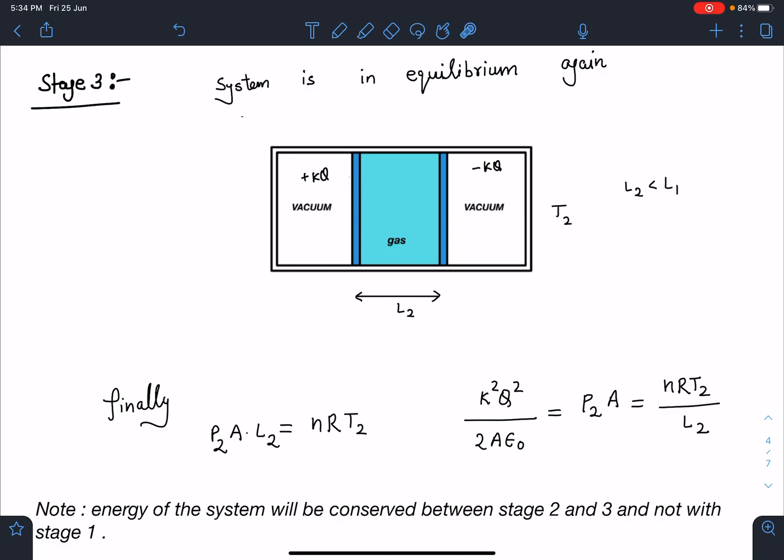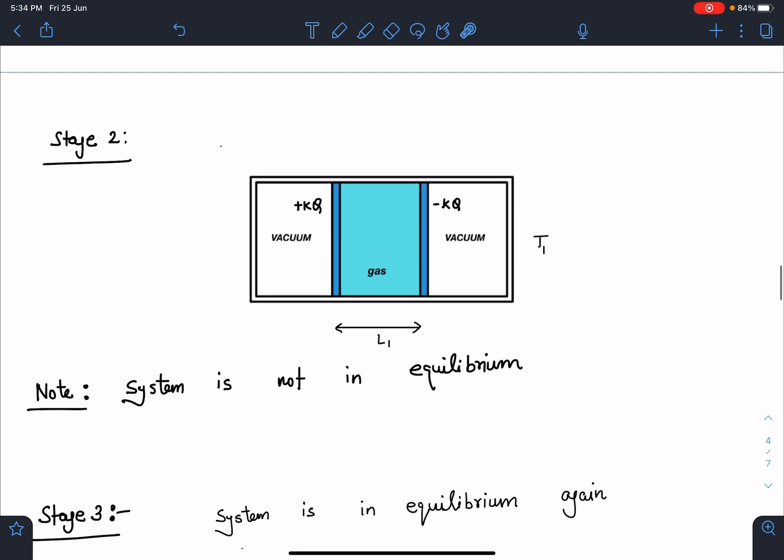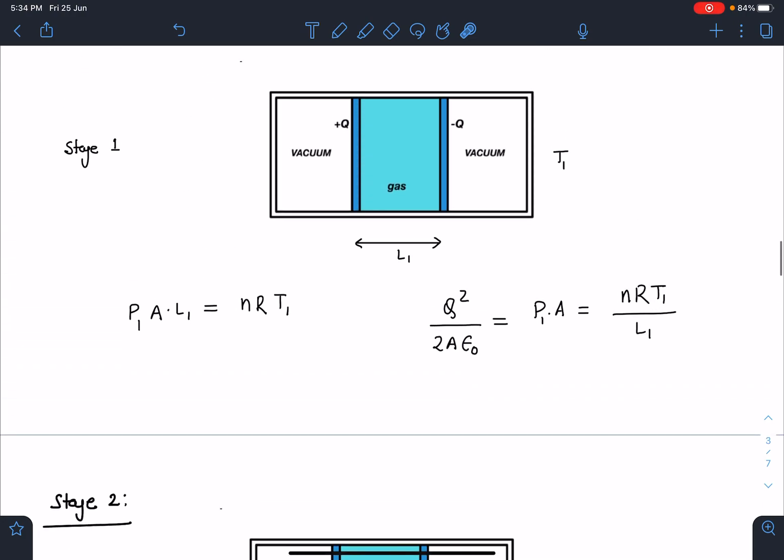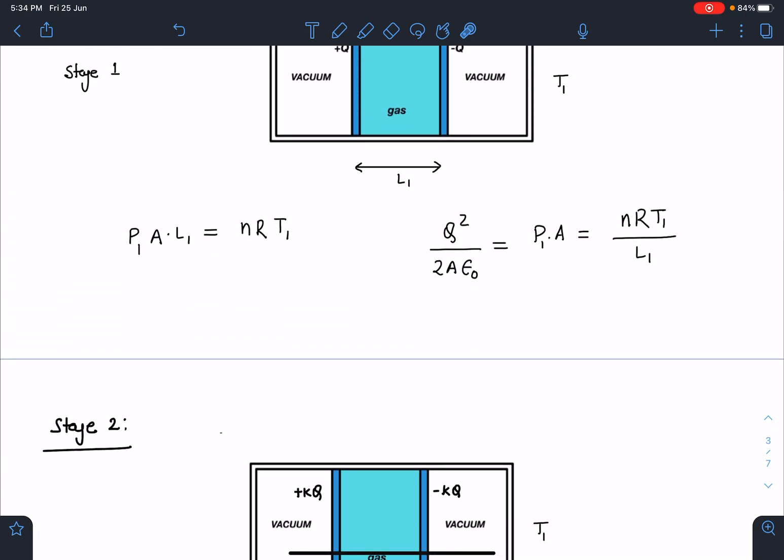Now we can apply energy conservation between Stage 2 and 3 but we cannot apply energy equation between Stage 1 and Stage 2 because while increasing the charge from Q to KQ one external agent was involved so we must include work done by external agent. So U initial plus W agent is equal to energy in Stage 2, this will be the correct way of approaching this problem.